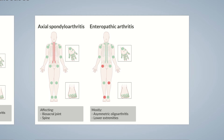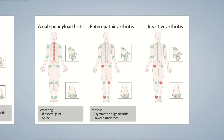A condition with a similar pattern of joint involvement to enteropathic arthritis is reactive arthritis. It often occurs after bacterial infection of the gastrointestinal tract or the urethra, and the most common pattern is also asymmetric oligoarthritis of the lower extremities. The patient should be asked whether there's a recent history of infection in the six weeks before joint pain onset. Joint pain associated with reactive arthritis eventually disappears and is rarely chronic.